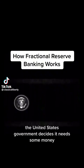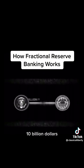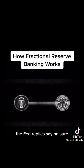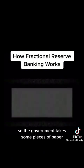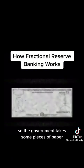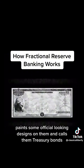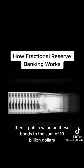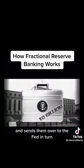The United States government decides it needs some money, so it calls up the Federal Reserve and requests, say, $10 billion. The Fed replies saying it will buy $10 billion in government bonds. So the government takes some pieces of paper, paints some official-looking designs on them, calls them Treasury bonds, puts a value of $10 billion on them, and sends them over to the Fed.